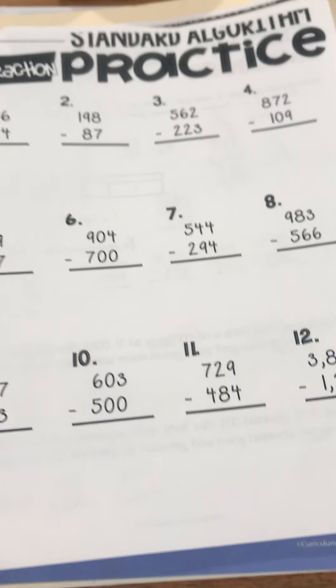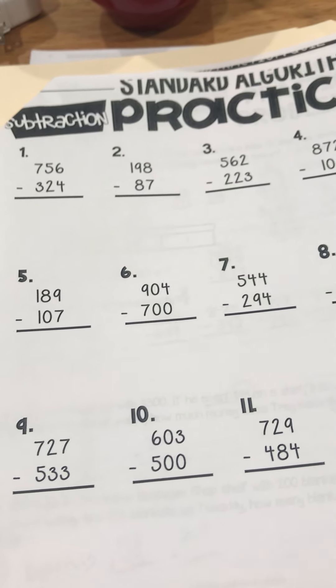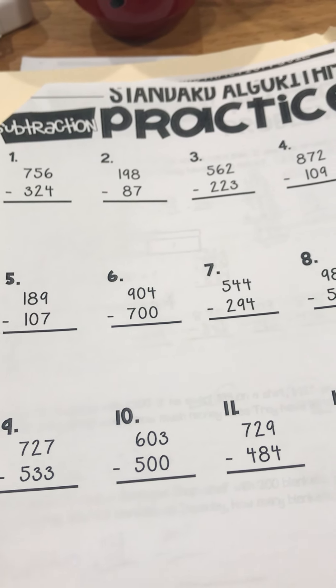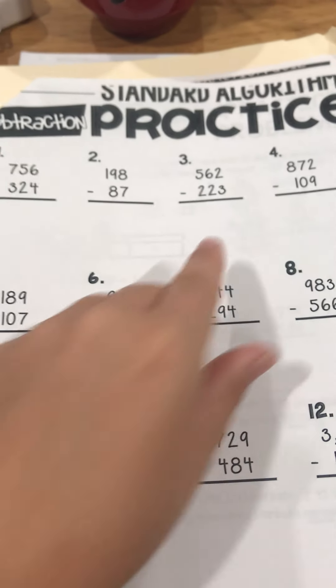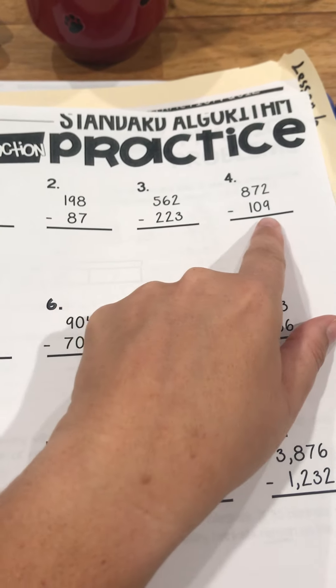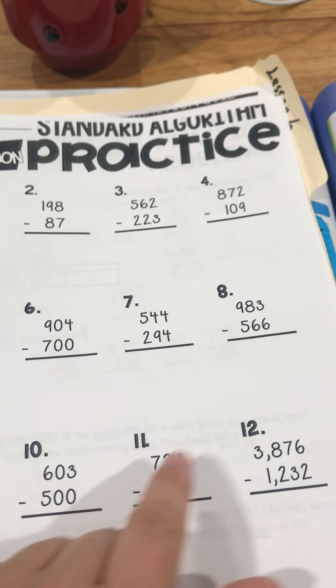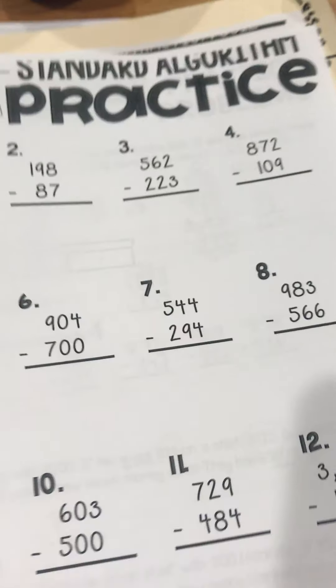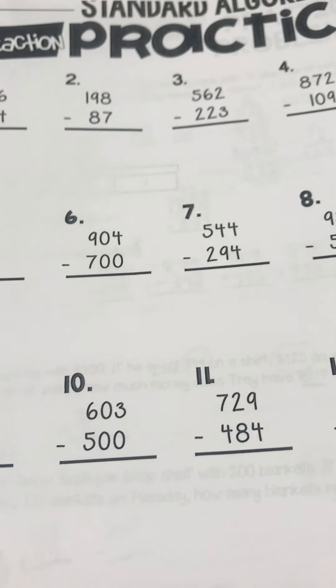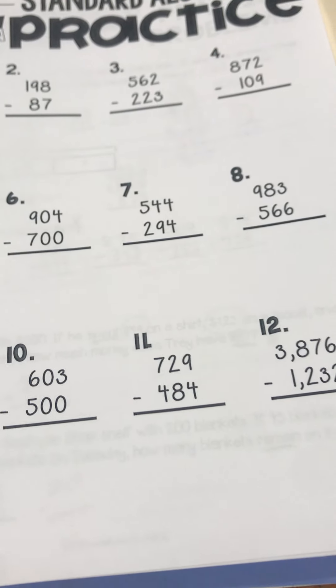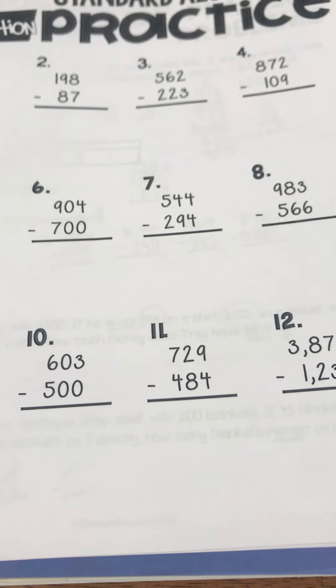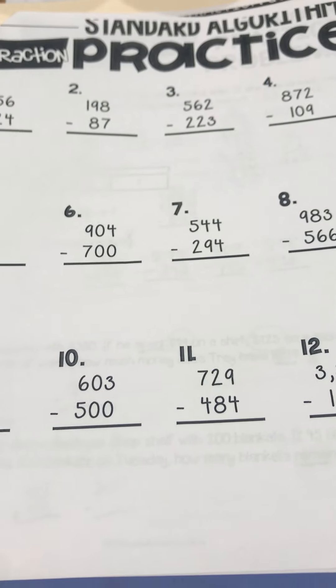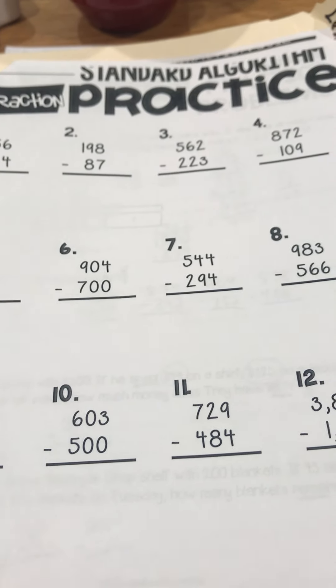And then the only other thing you have this week is just practicing your subtraction. There will be some where you don't have to borrow at all. Some you are going to have to regroup on. And some you're not. So practice some different strategies, some different methods. Practice that place value strategy where you're breaking it up. Practice some add-ons, especially if you have zeros on the top. And definitely practice your traditional.